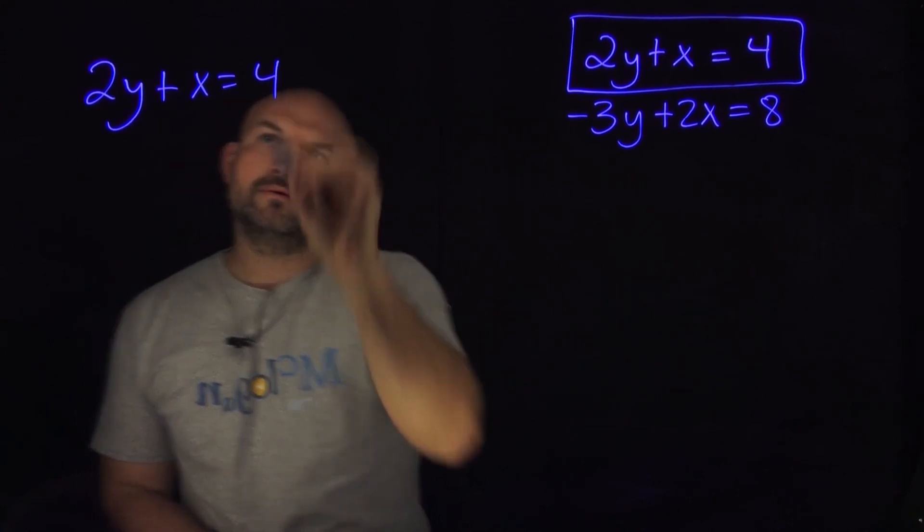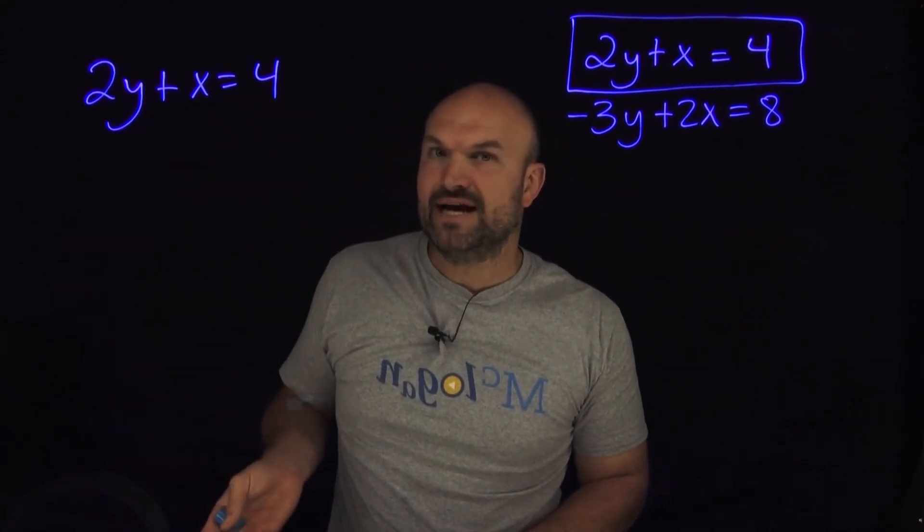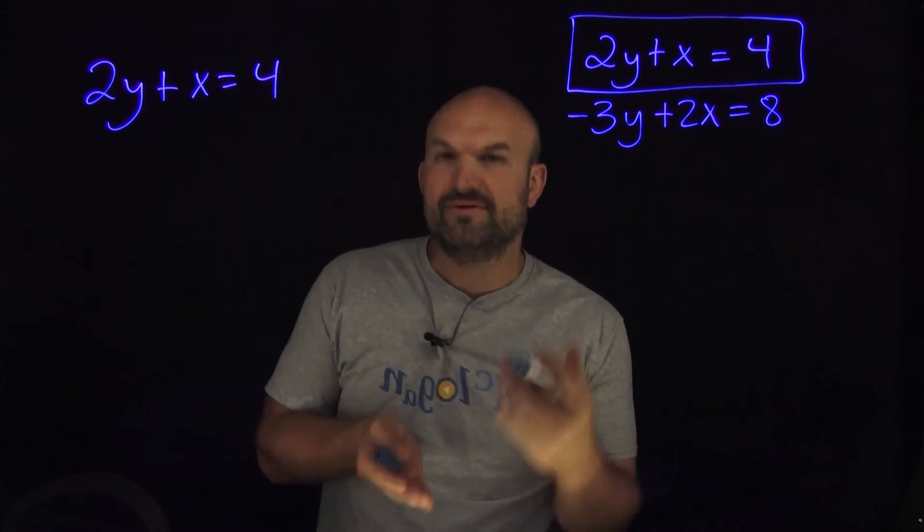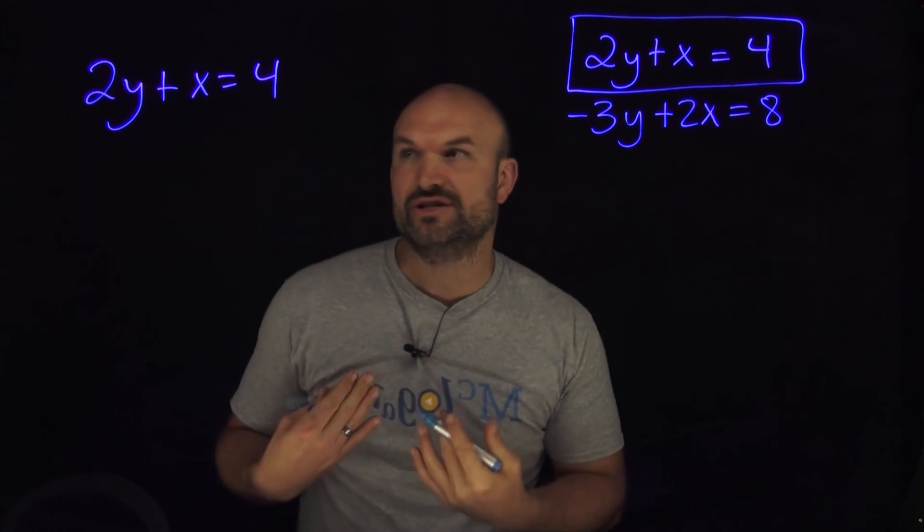If I write it over here, to go ahead and solve for my x, all I simply need to do is subtract the 2y on both sides. Now, again, I can't subtract the 2y from the 4 to get a value, but I can go ahead and write an algebraic expression doing just that.